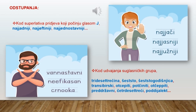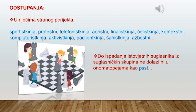Zatim kod udvajanja suglasničkih grupa: predržavni, vanastavni, neefikasan, crnoka i tako dalje. Odstupanja od gubljenja suglasnika srećemo i u riječima stranog porijekla, kao na primjer sportistkinja, protestni, auristni, finalistkinja, azbestni, aktivistkinja, pacijentkinja i tako dalje.